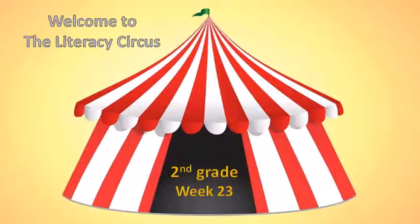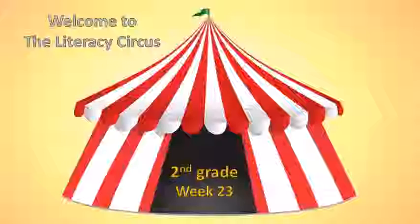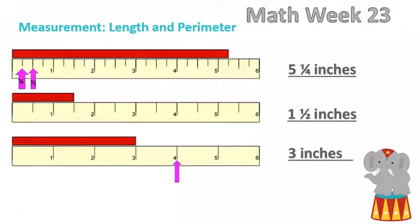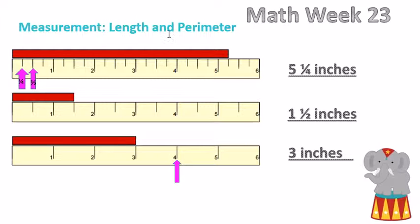Welcome to the Literacy Circus second grade week 23 math. This week we're going to learn about measurement, length, and perimeter. Here we have three rulers, and on this first ruler the red strip goes out to five and a quarter inches.